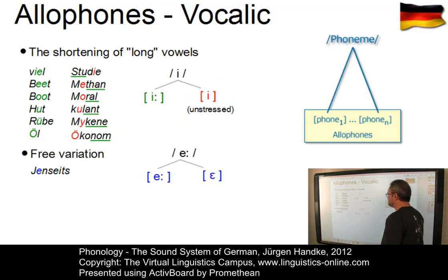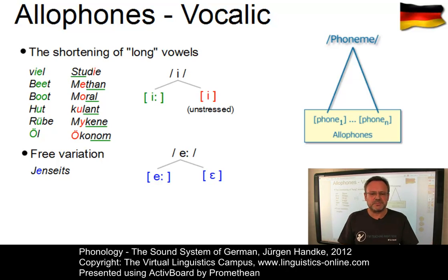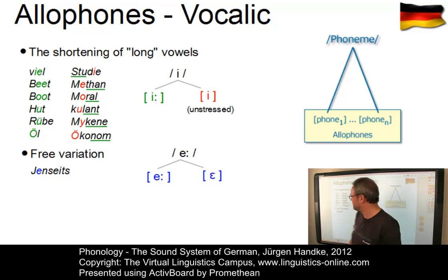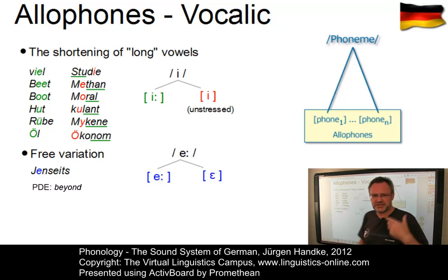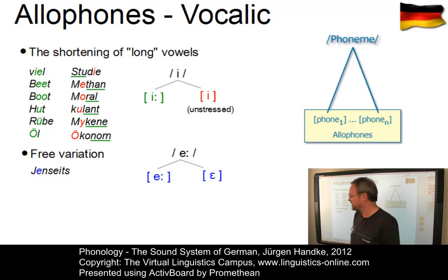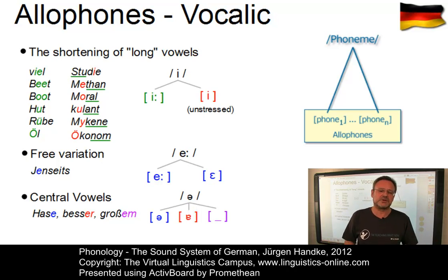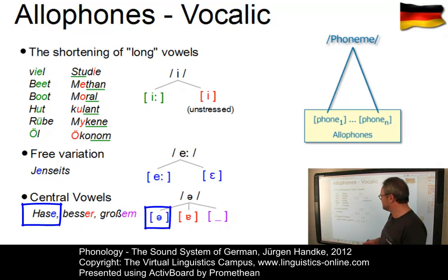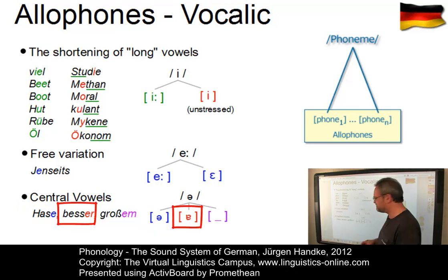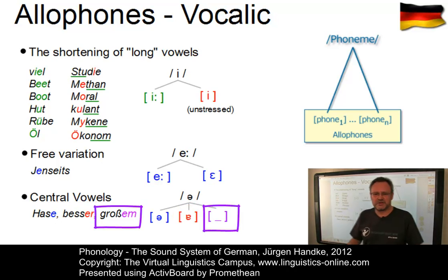Another aspect is referred to as free variation. Some vowel phonemes can be replaced by an alternative without changing the meaning. This phenomenon, which does not occur in standard German, is referred to as vocalic variation. The example here is the word Jenseits, which can either be pronounced with a long e — Jenseits — or with a short e — Jenseits. Central vowels are also quite interesting in German. The schwa is generally defined as a phoneme, even though some of its allophones deviate considerably in terms of vowel quality. For example, Hase shows a central vowel, Besser involves a low central vowel in unstressed position, and in Großem the vowel is dropped altogether.